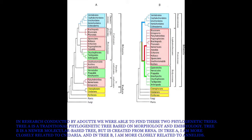In research conducted by Adu, we were able to find two phylogenetic trees. Tree A is a traditional phylogenetic tree based on morphology and embryology. Tree B is a newer molecular-based tree created from rRNA. In Tree A, I am more closely related to Cnidaria, and in Tree B, I am more closely related to annelids.